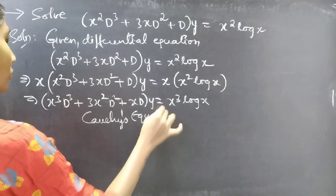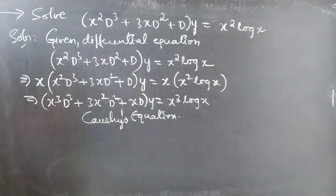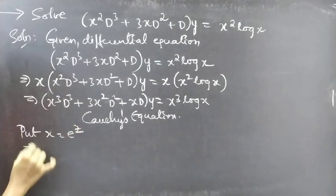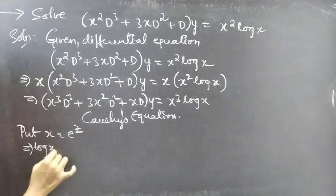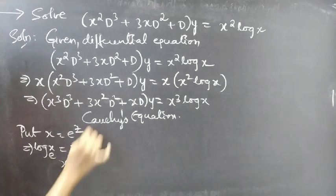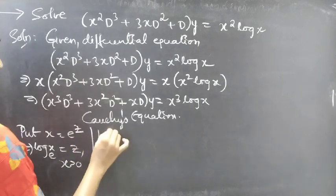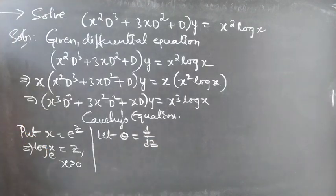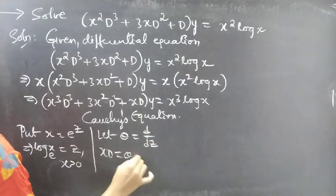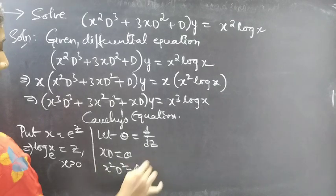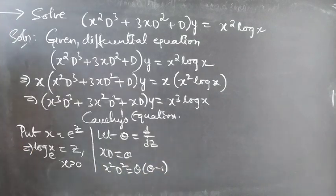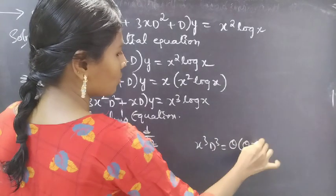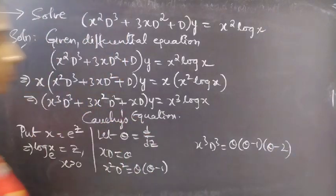We'll just multiply x on both sides. Then we'll get x cubed D cubed plus 3x squared D squared plus xD into y equal to x cubed log x, which is Cauchy's equation. Now we'll make the substitution: let x equals e power z. Then log x to the base e equals z for x greater than 0, and let theta equals d by dz. Here theta is a differential operator with independent variable z.